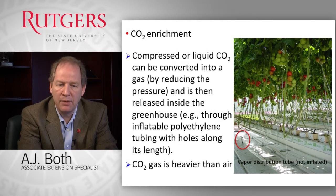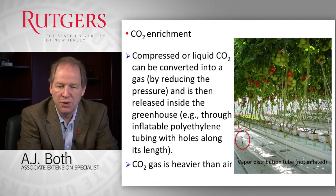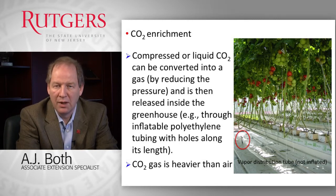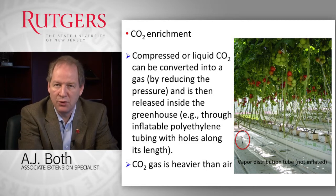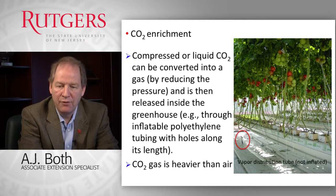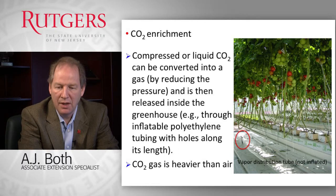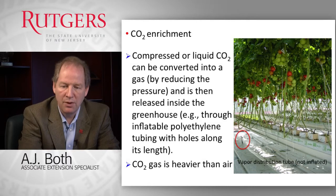If we use compressed or liquid CO2, which is one of the most typical systems, we can convert it into a gas by releasing the pressure. We typically have a distribution system installed in the greenhouse — very often small inflatable polyethylene tubes with little holes along their length — that distribute the gas throughout the greenhouse environment. One thing to remember is that CO2 gas is a little heavier than air, so it tends to settle to the bottom. We sometimes use horizontal airflow fans to mix the greenhouse environment and ensure the CO2 is evenly distributed.